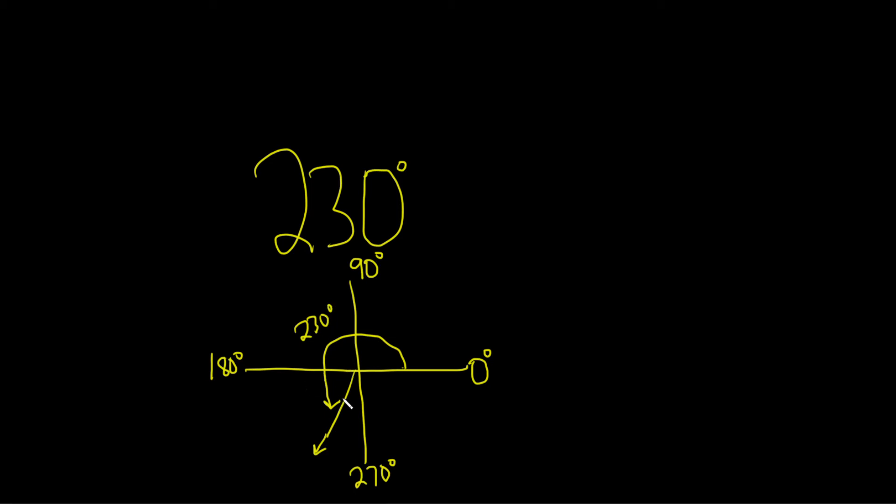So what is a reference angle? The reference angle is the positive angle which is acute, which means it's less than 90, made with the terminal side of our angle, which is this, and the x-axis. That means it's this.